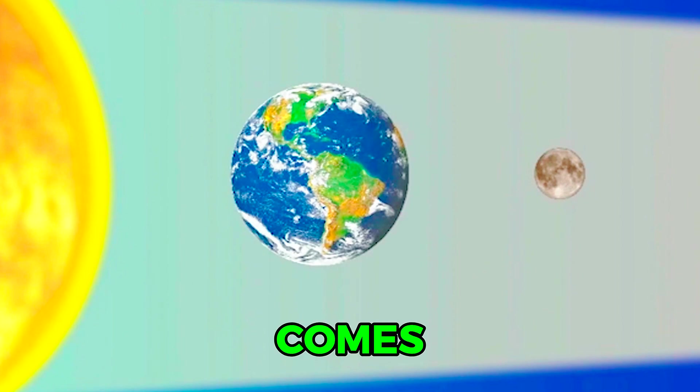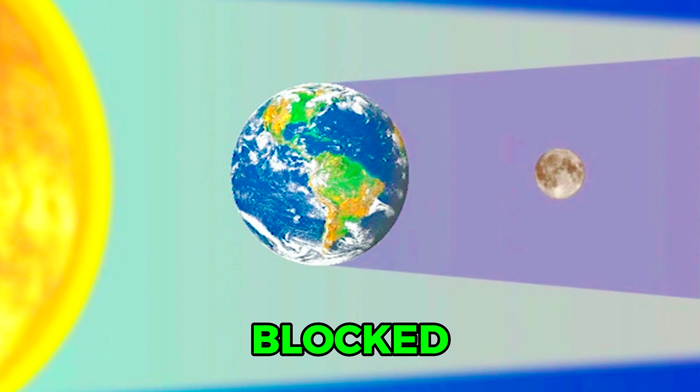A lunar eclipse occurs when the Earth comes between the Sun and the Moon, and sunlight is blocked from hitting the Moon. A total lunar eclipse only occurs when the Moon is full.